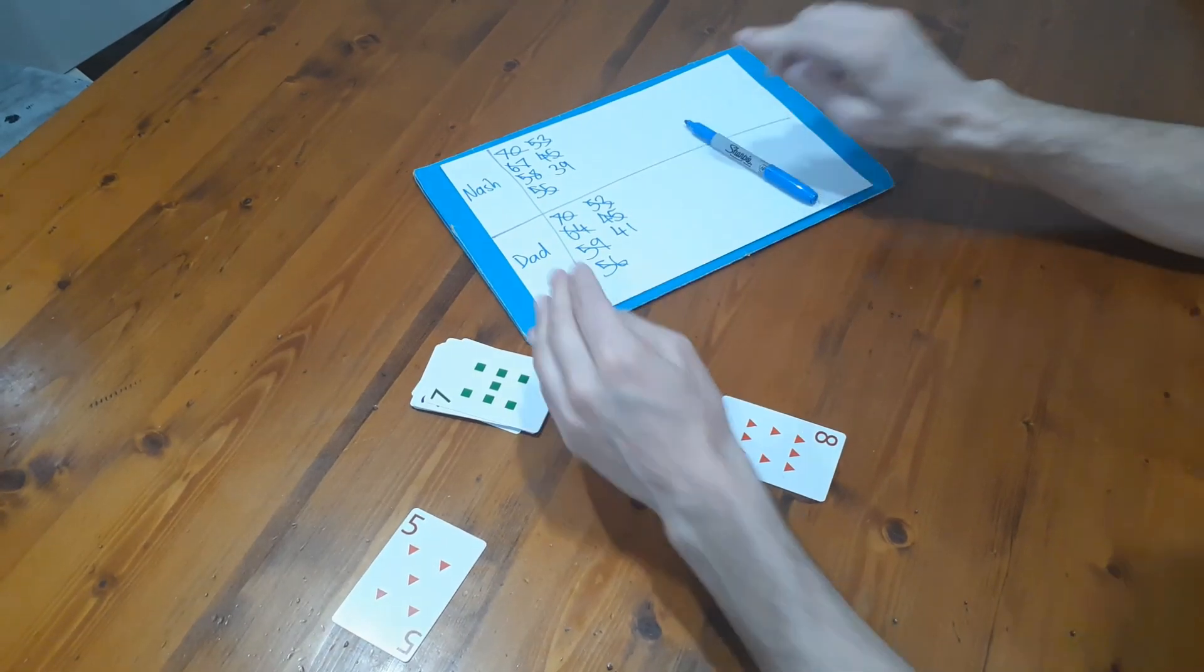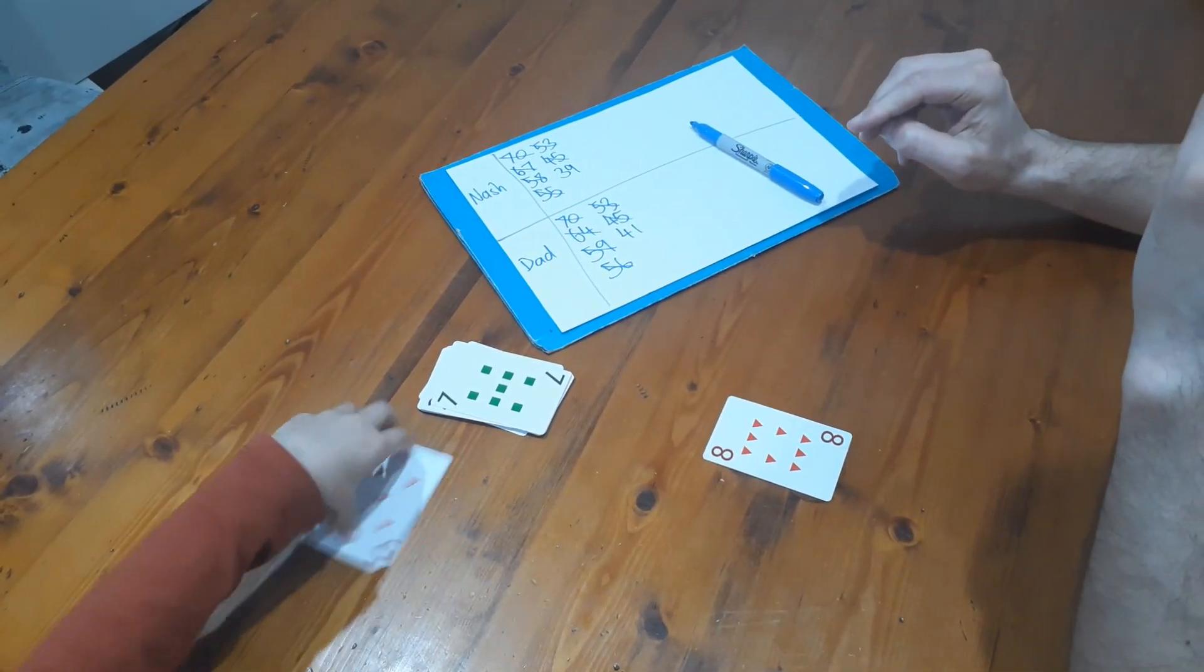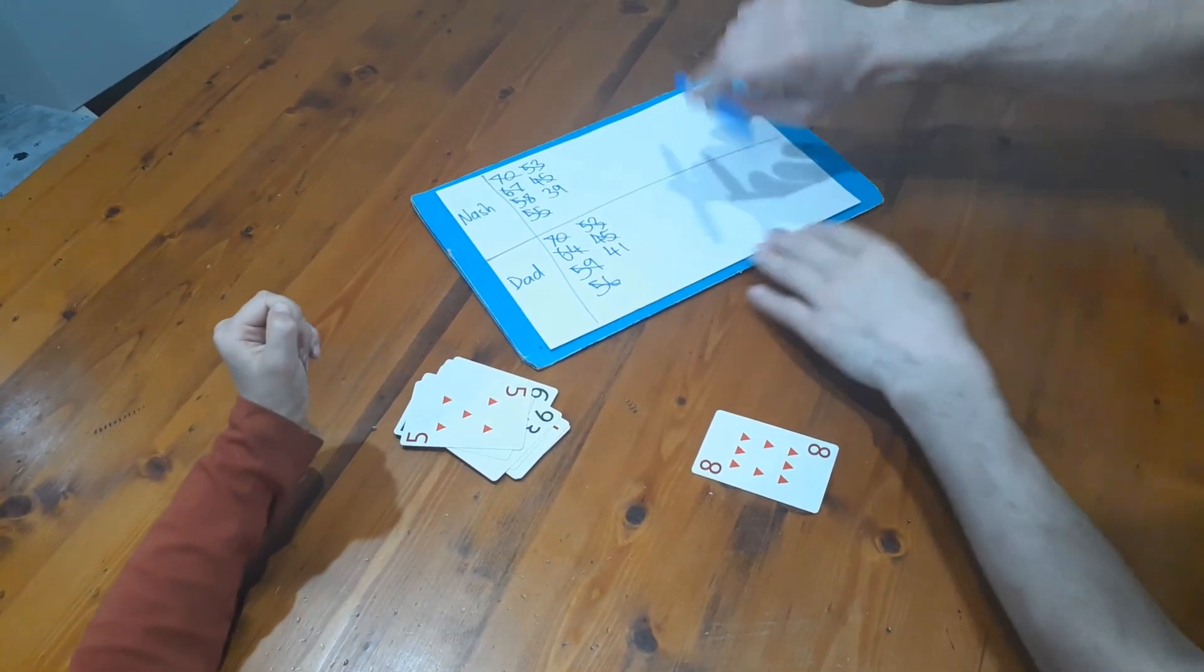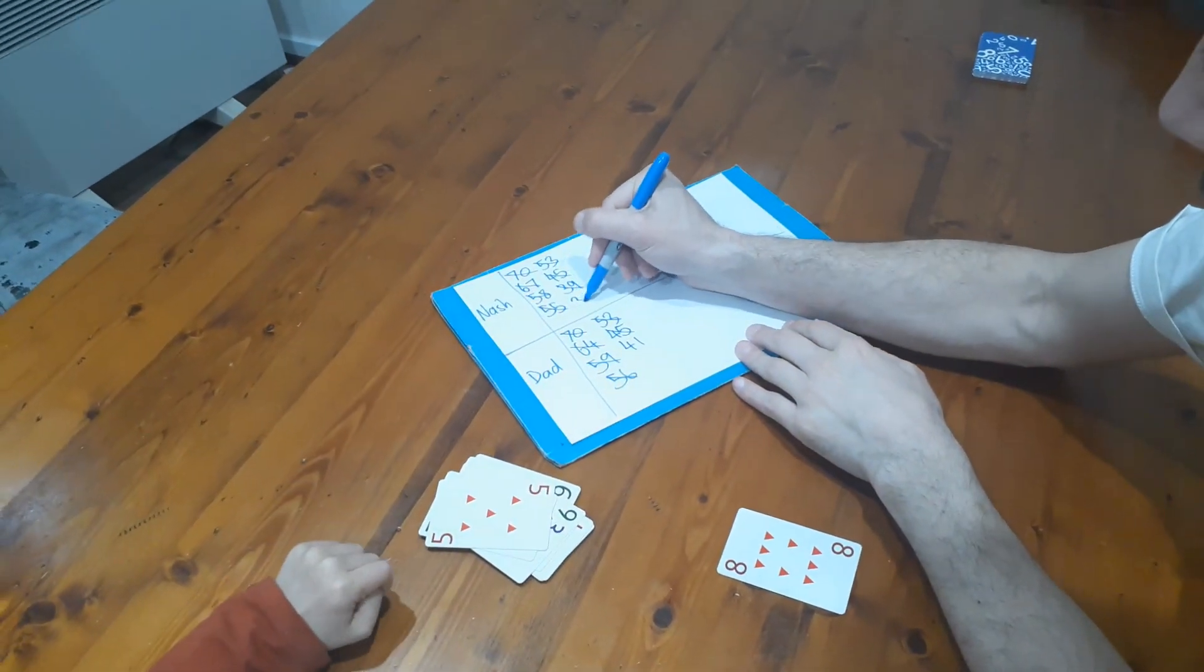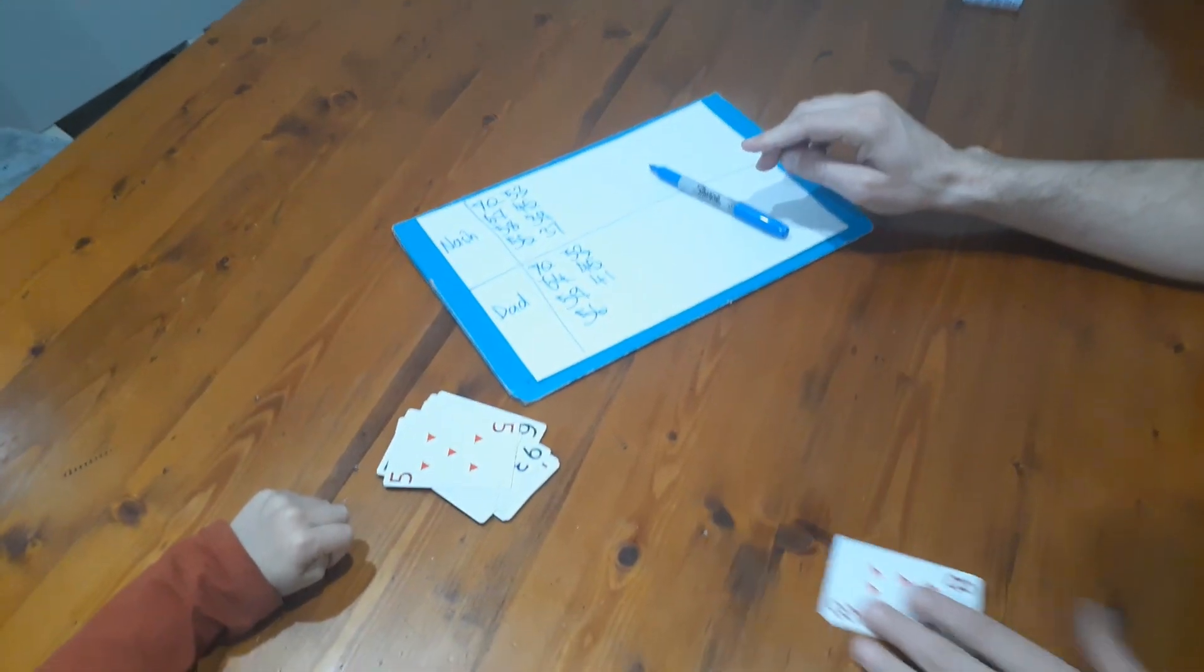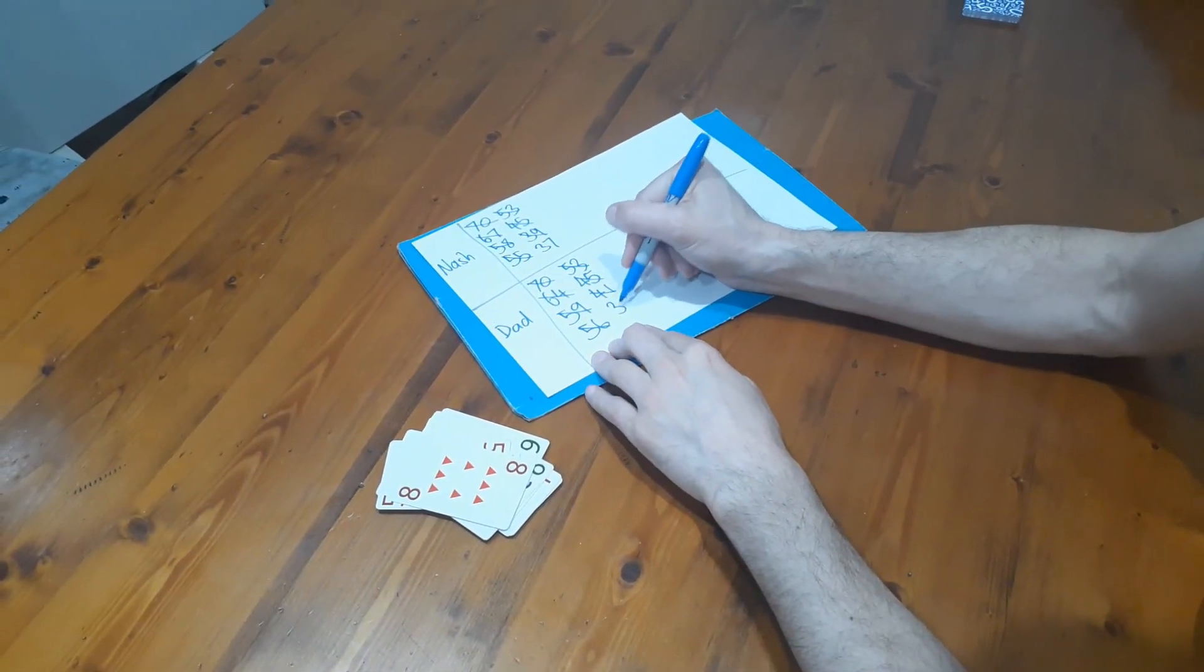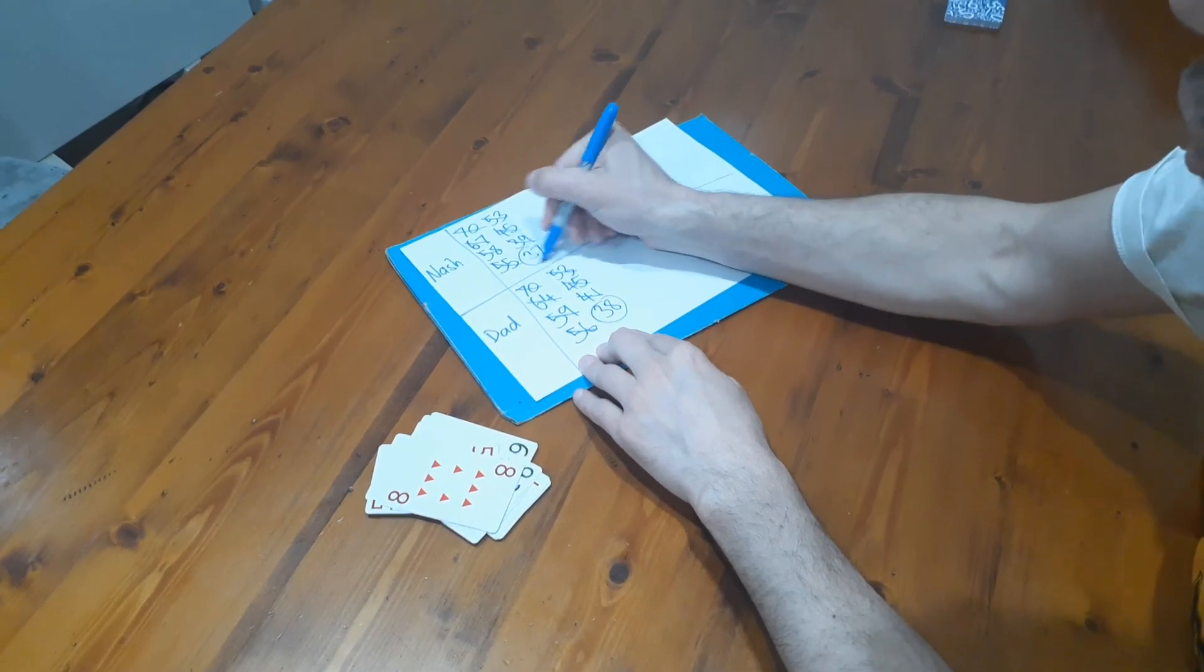And then I'm going to play a five - that's two, so I'm on 37. Okay, and I'm going to play that, which is three, which puts me on 38. Okay, so Nash, who was closer to 35?